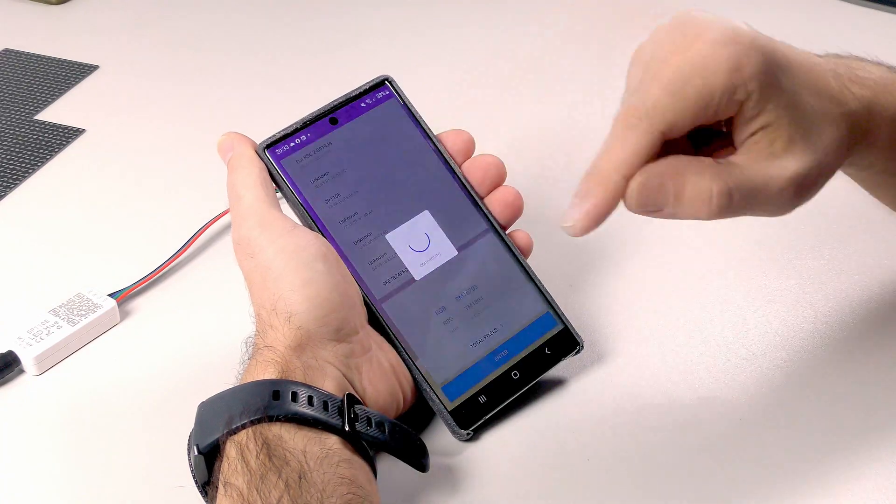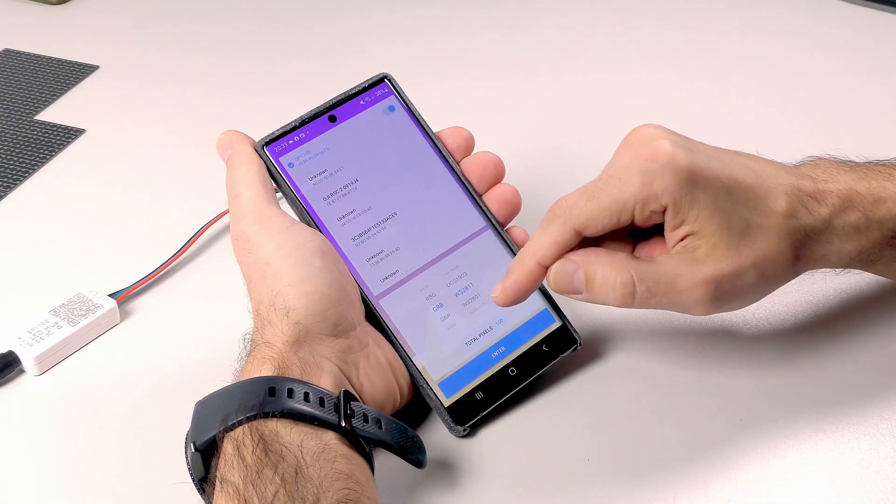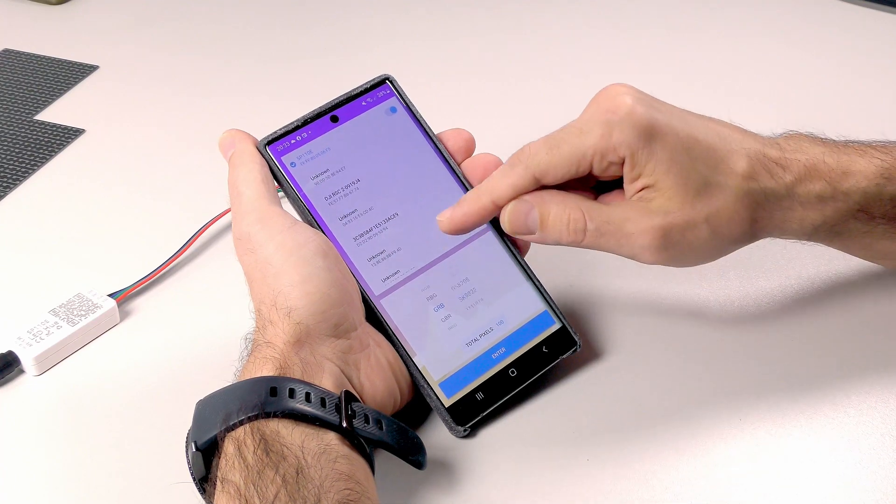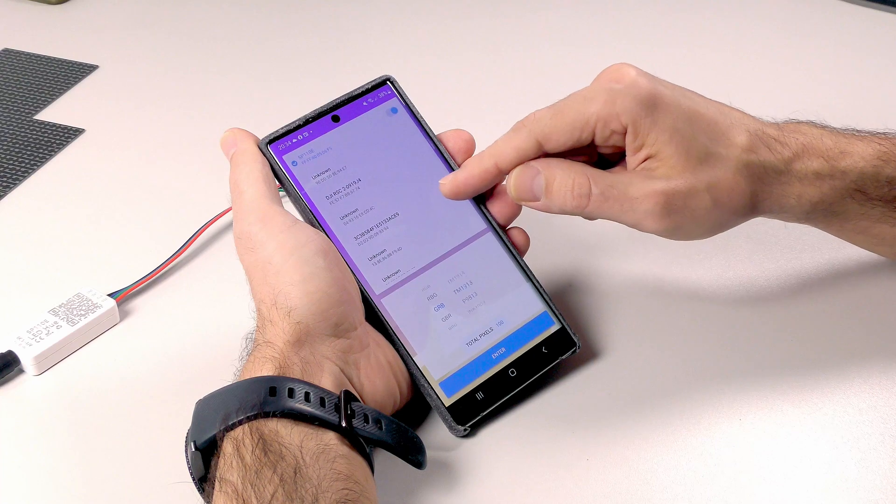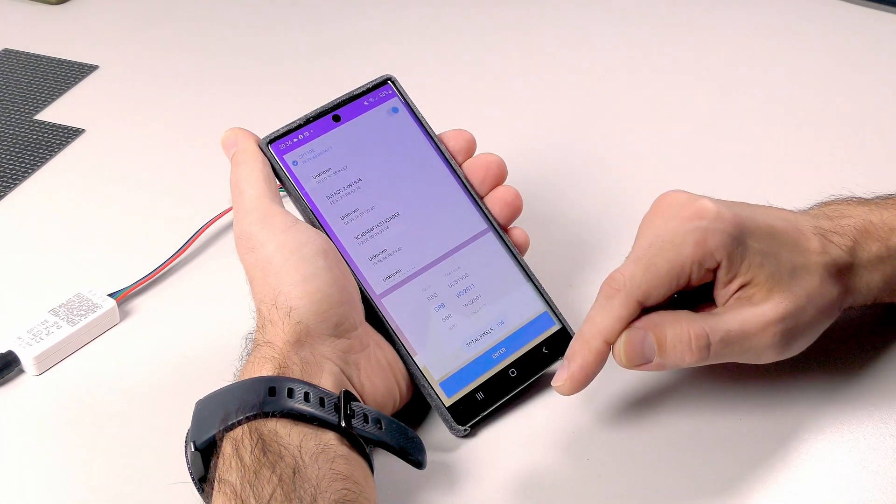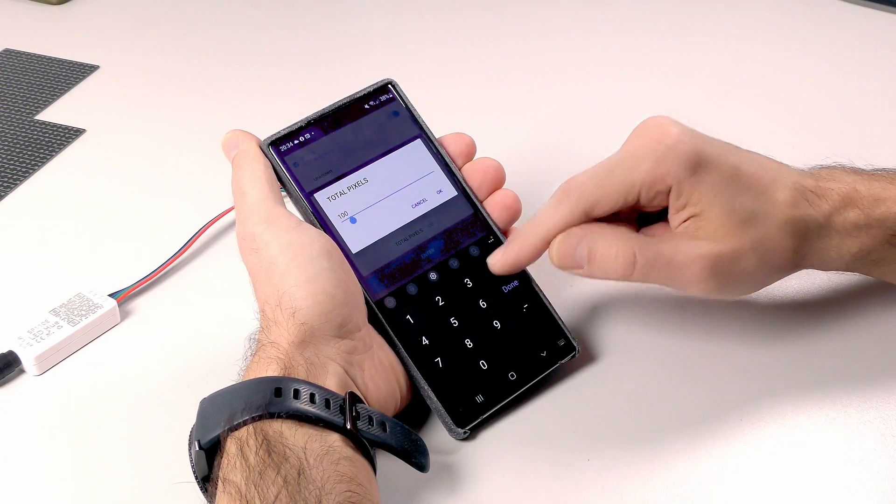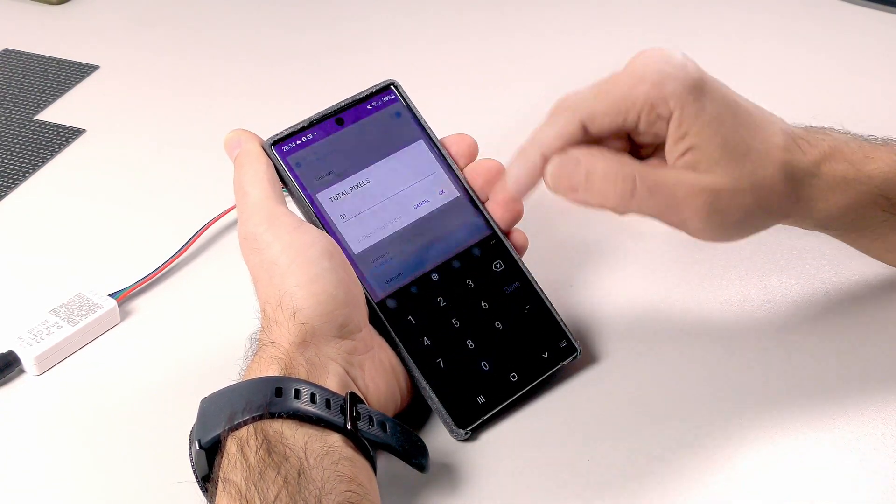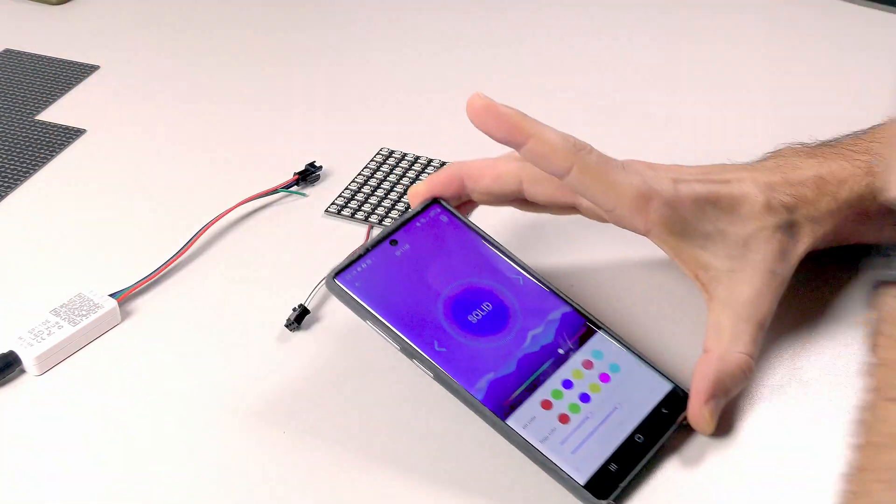This is the SP110E and we have to choose the LED type. This is not in the list but hopefully it will work. Because we should need the WS2812, pixels is 81, enter and let's see what's happening.